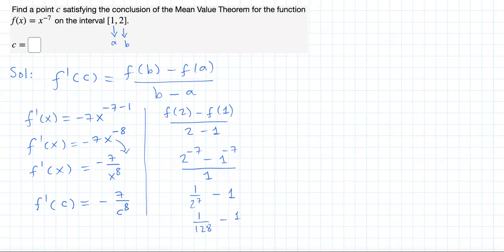So we have 1/128 - 1. But 1 is just 1/1. If you multiply numerator and denominator by LCD 128, you're going to get 1 - 128, which is -127 over 128.